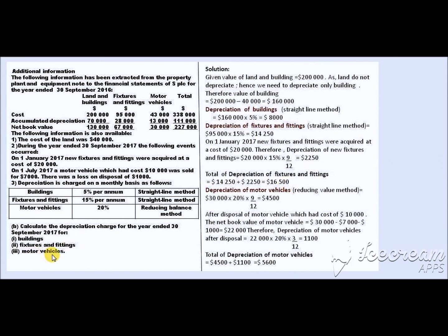For motor vehicles, the rate is 20% using the reducing balance method, so we use the net book value. The net book value given is $30,000. Further information states that on 1st July 2017, a motor vehicle which had cost $10,000 was sold for $7,000. For this vehicle, we take the net book value of $30,000 × 20% × 9/12 (from 1st October to 1st July = 9 months), giving depreciation of $4,500.